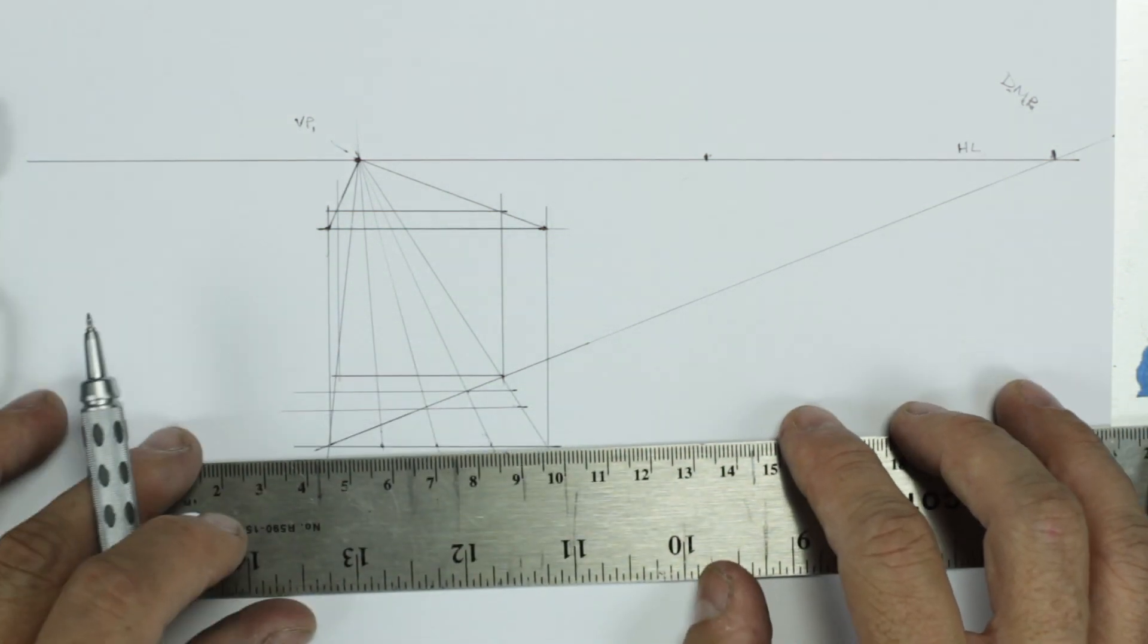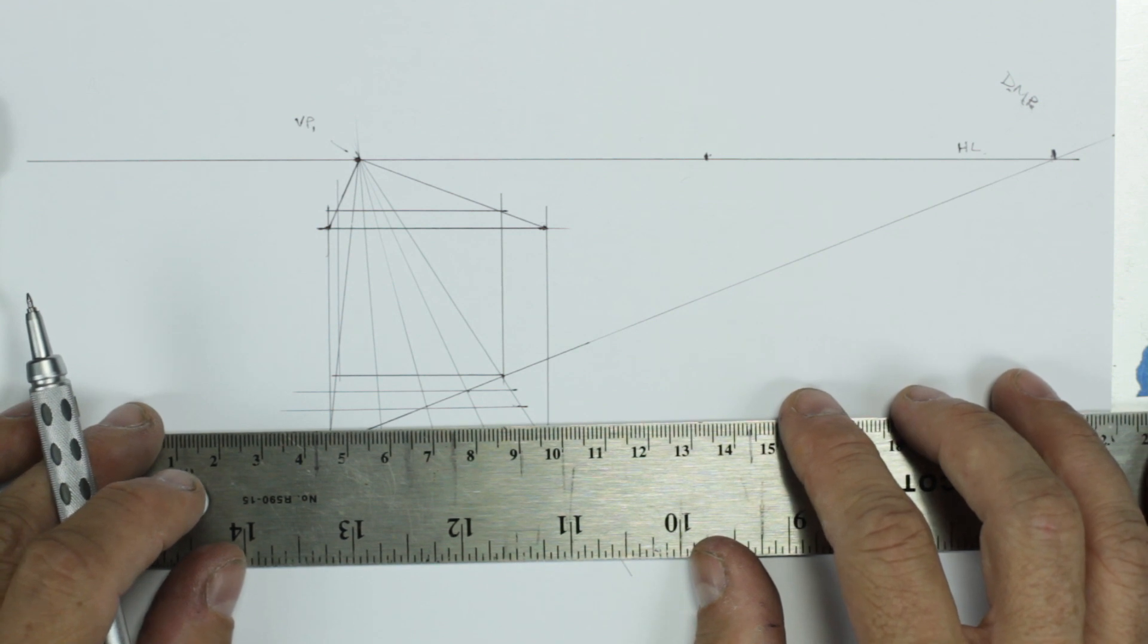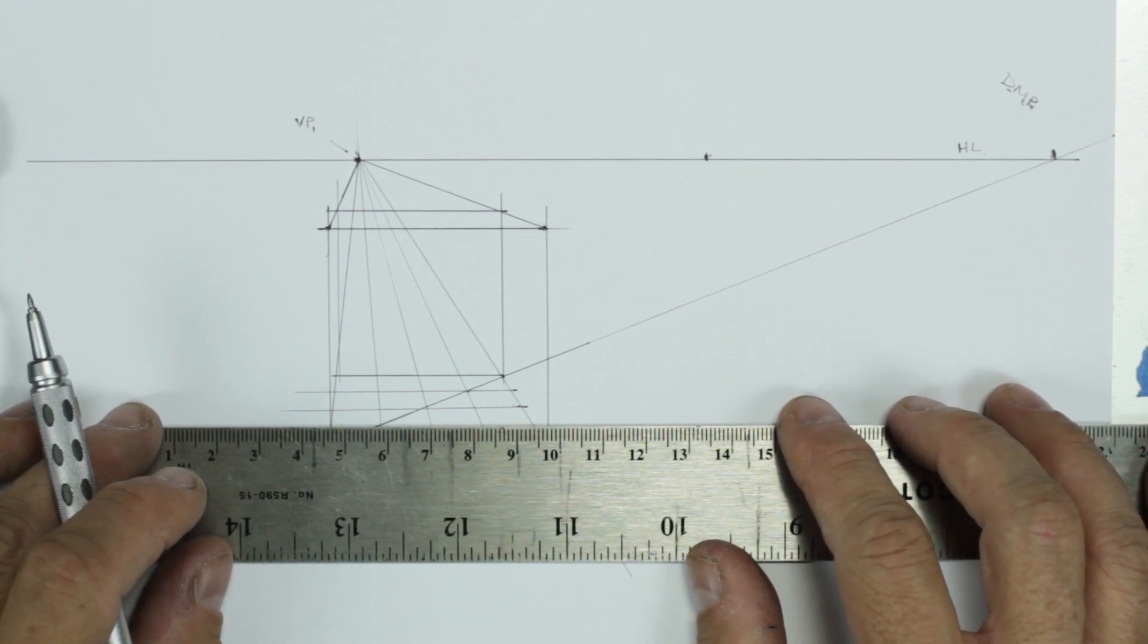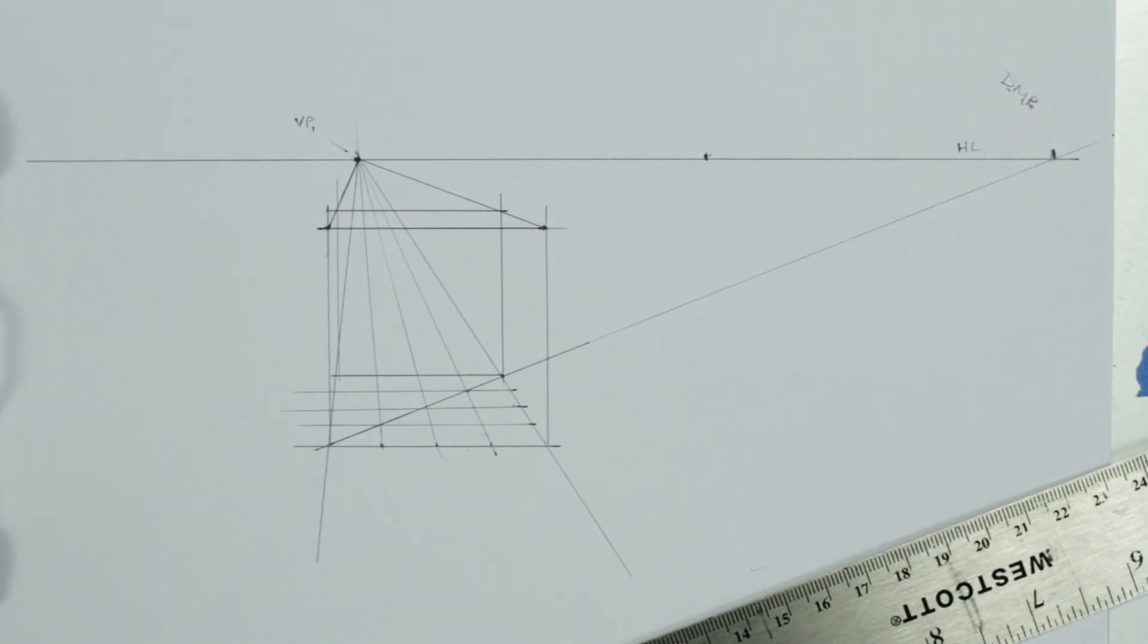Once. Twice. Which I kind of missed that point there. And then the third one here. And what I've done is I've created a square unit grid. So a four by four grid on the ground plane.